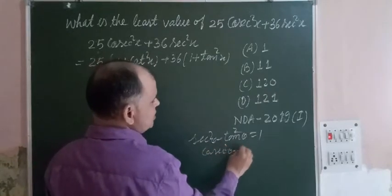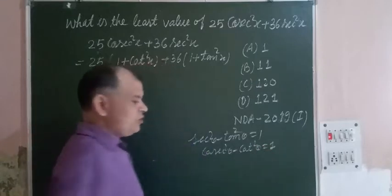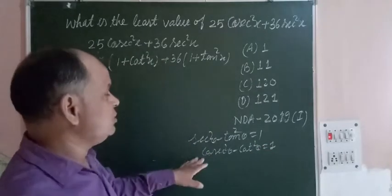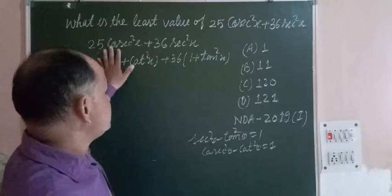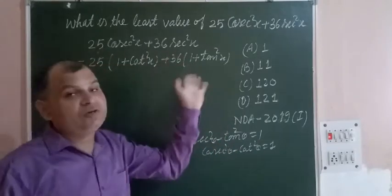These are important formulas we use from here, and we put the value of cosec²θ = 1 + cot²θ and sec²θ = 1 + tan²θ.